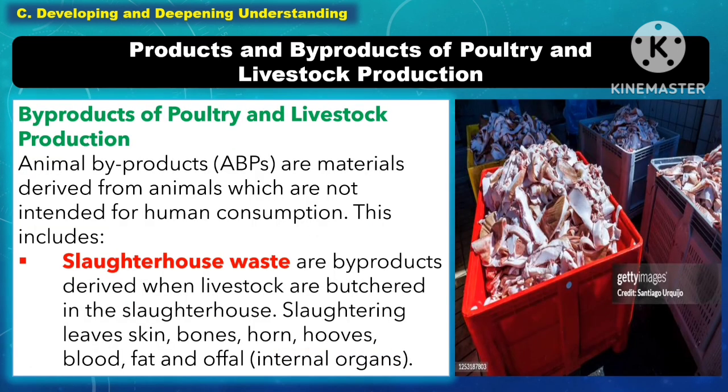Animal byproducts are materials derived from animals which are not intended for human consumption. This includes slaughterhouse waste — byproducts derived when livestock are butchered in the slaughterhouse. Slaughtering leaves skin, bones, horn, hooves, blood, fat, and offal, or internal organs.